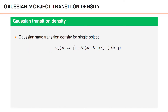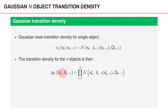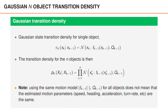Let's take an example where we have a Gaussian state transition density for single objects. The transition density pi is a Gaussian density with some motion function f and process noise covariance q. The transition density for all n-objects is then a product of this Gaussian density for each object. We should point out that even though we are using the same motion model f and q for all objects, it does not mean that the estimated motion parameters such as speed, heading, acceleration, turn rate, etc., are the same for all objects.